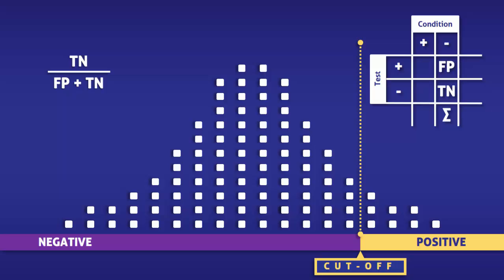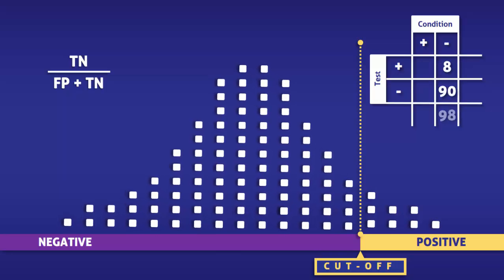Counting the squares, we find that there are 8 false positives, 90 true negatives, and 98 people in total without the disease.